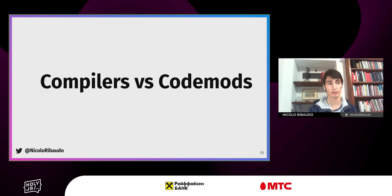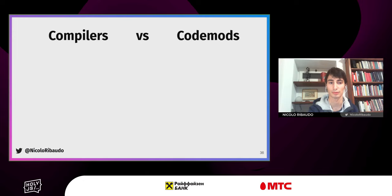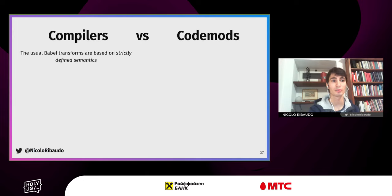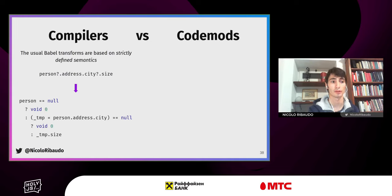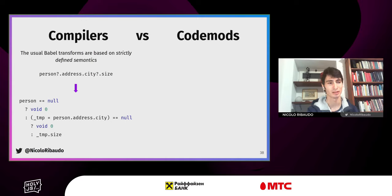Other companies also use codemods: Facebook publishes codemods to migrate away from legacy React versions, Gatsby provides codemods for similar things, and Next.js provides codemods to upgrade from old features to new features. So how are codemods different from normal compilers? Compilers are based on strictly defined semantics — in this case the JavaScript specification — so they take some input code and produce output that exactly reflects the semantics of the original code.